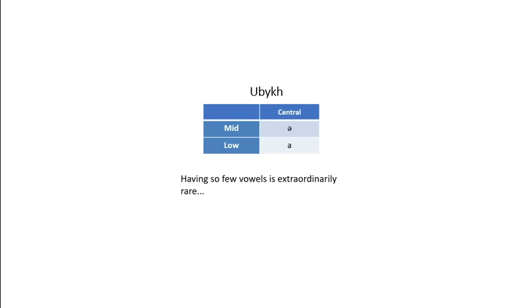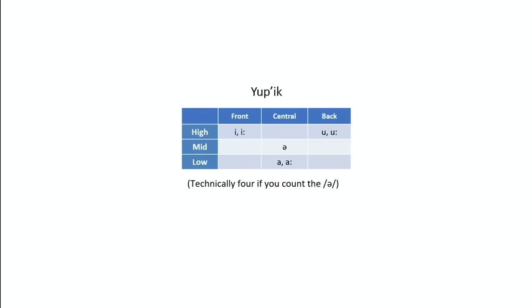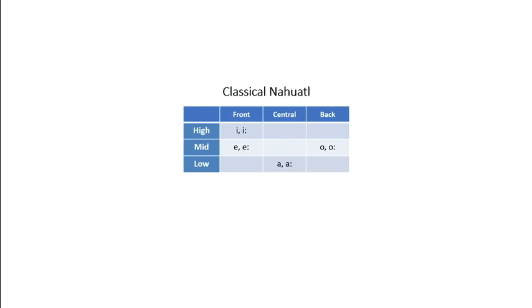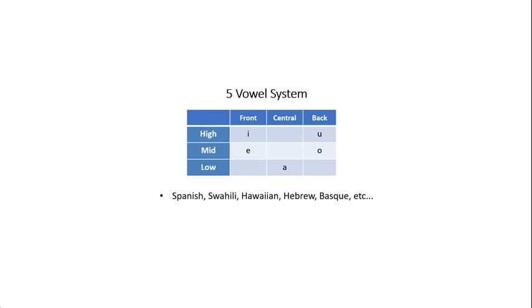Every language in the world features at least two vowels. Some, like Arabic and Yupik Inuit, have only three vowels. Some Native American languages have four vowels, but by far the most common layout is the classic five vowel system, which is common in every language family on every continent.